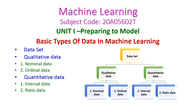In this machine learning class, we will see the basic types of data in machine learning that will come under the first unit, 'Preparing to Model' chapter. There are two types of datasets: first is qualitative data and second is quantitative data. Qualitative data has two sub-types: nominal data and ordinal data. Quantitative data also has two sub-types: interval data and ratio data.